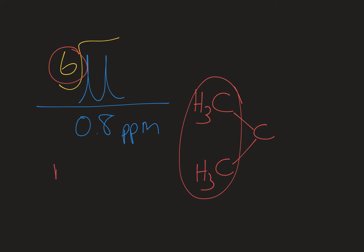If I look to my splitting, I have n plus one equals two. It's a doublet. So n equals one, there's only one proton on the neighboring carbon atom. So there's a proton here. And then this must be attached to something else, but it's not a proton.